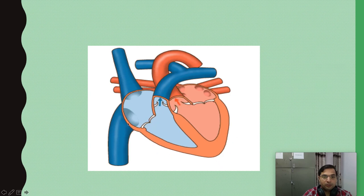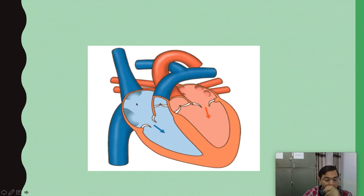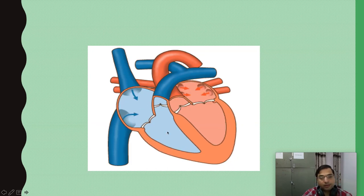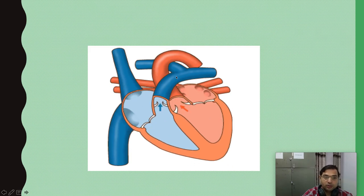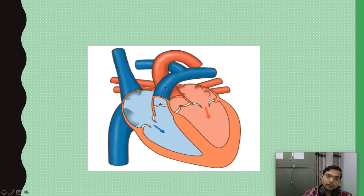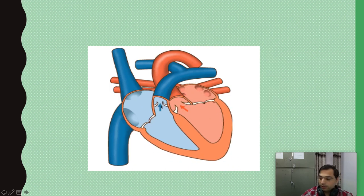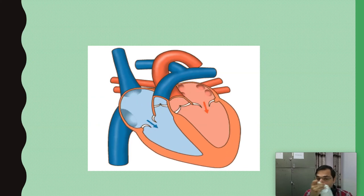On the right side, blood pours from the superior vena cava and inferior vena cava into the right atrium, flows into the right ventricle, and then goes into the pulmonary artery, which is guarded by the pulmonic valve.